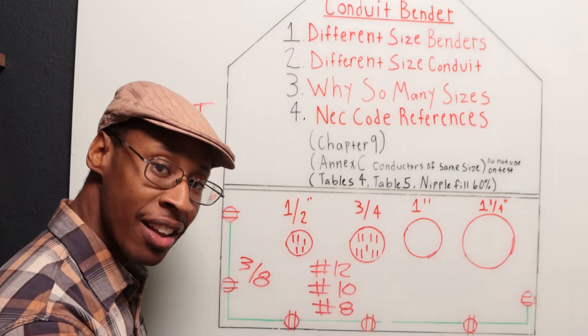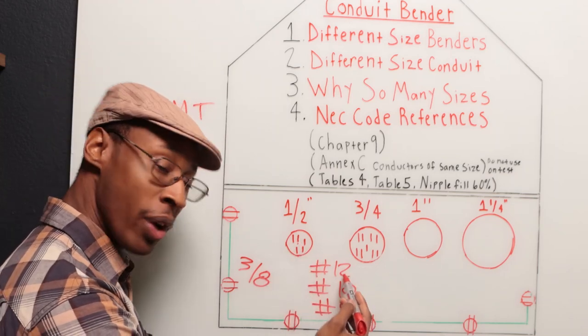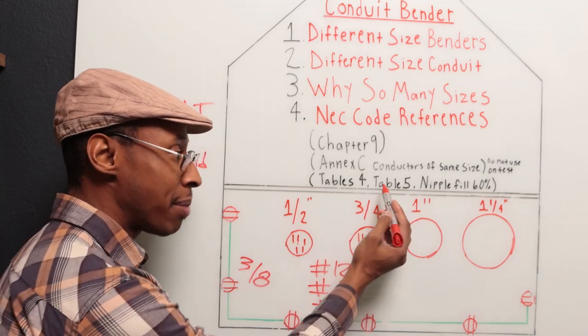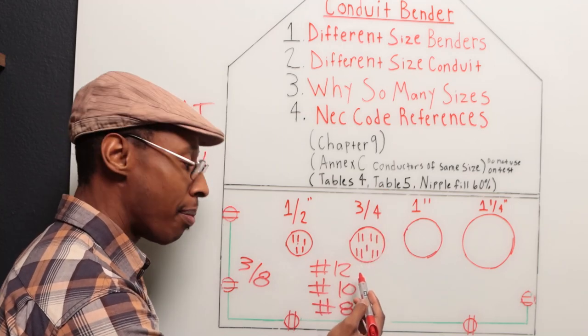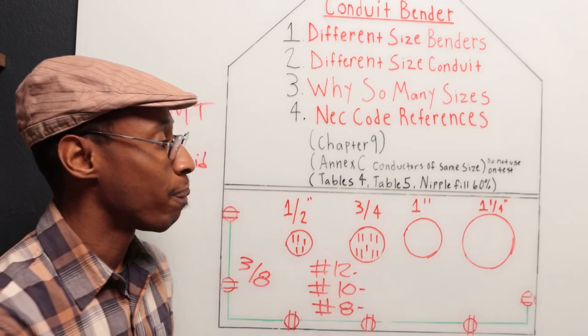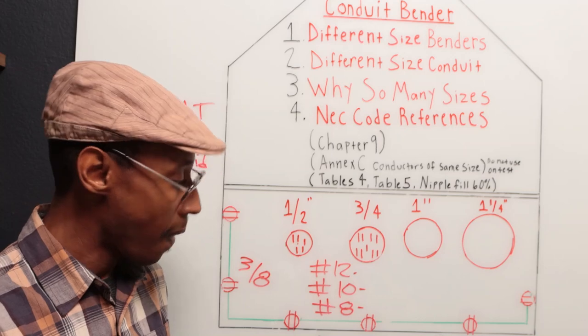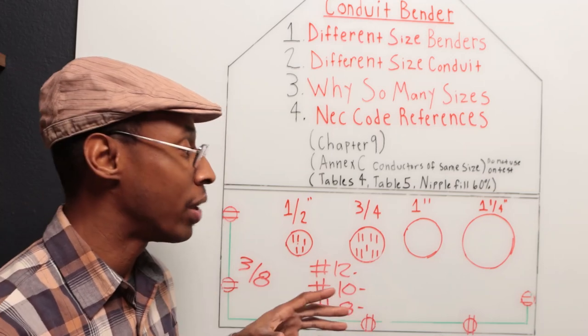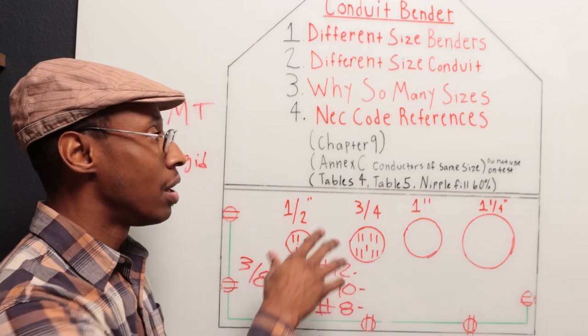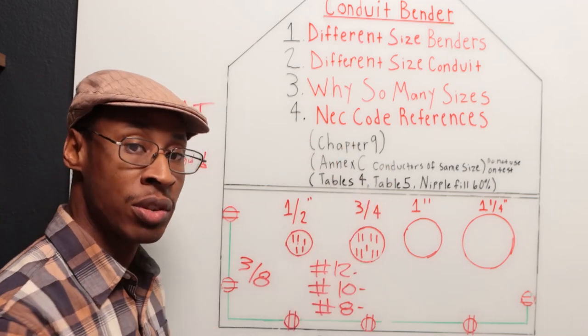Table five is going to talk about the wire size, the dimension of the different sizes of wire. You have number 12, you have 10, you have eight. Table five is going to talk to you about the different dimensions of these. The surface area. I don't want to go too far because I don't want to get ahead of myself and confuse you even further. But that's why I put reference because it's just a reference right now.